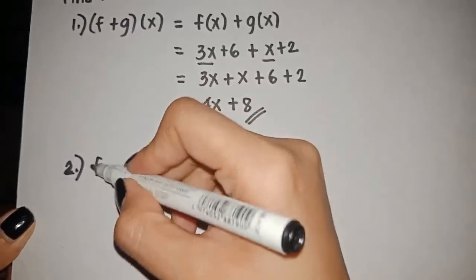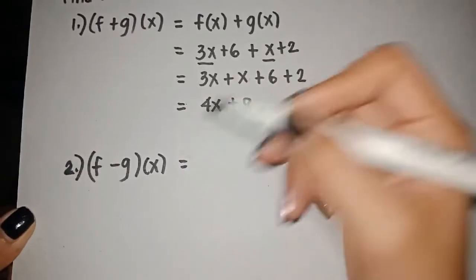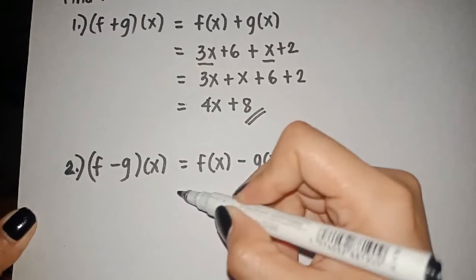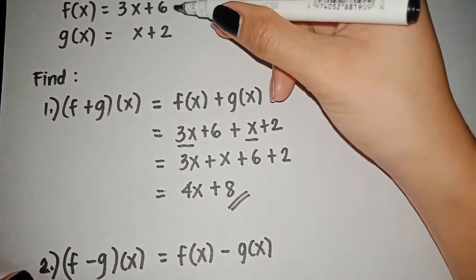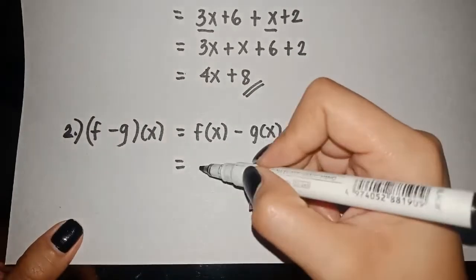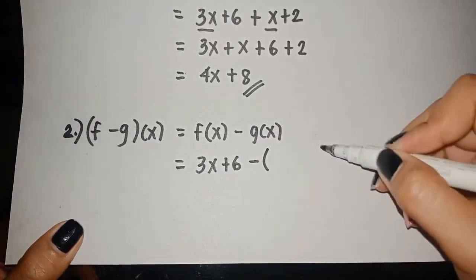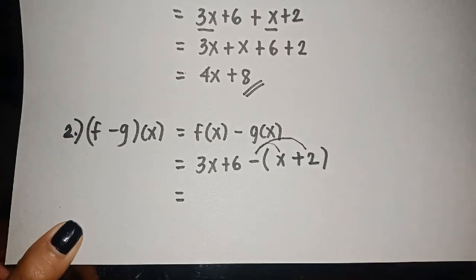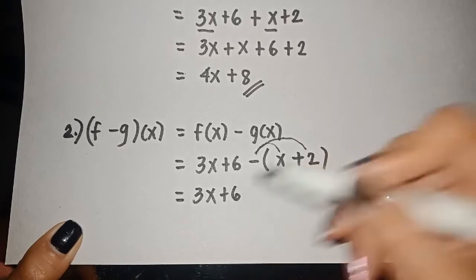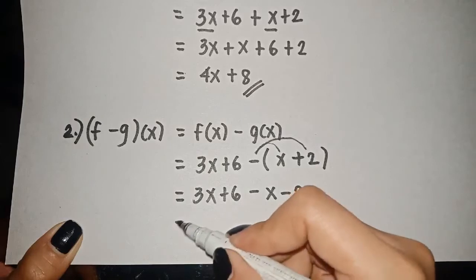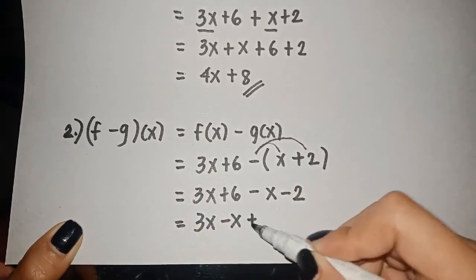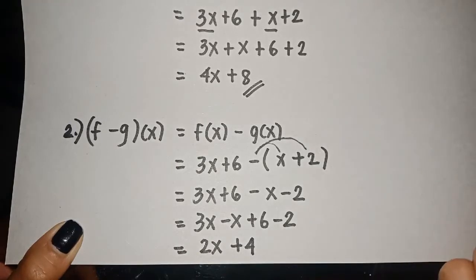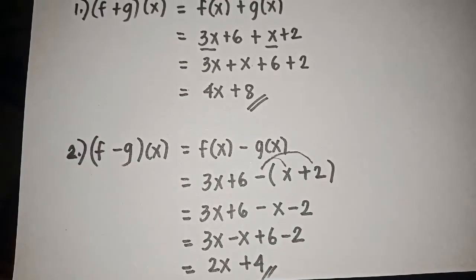Next, subtraction: (f − g)(x) = f(x) − g(x). We enclose G(x) with a parenthesis since that is the subtrahend, and distribute the negative sign. We have 3x + 6 − (x + 2), which gives negative x and negative 2. Combining similar terms: 3x − x is 2x, plus 6 − 2 is 4. So the final answer is 2x + 4.